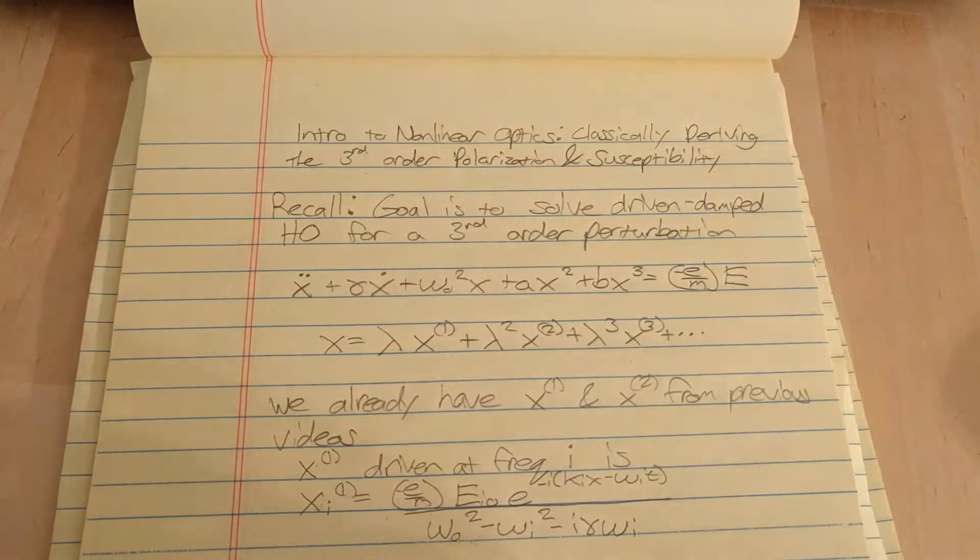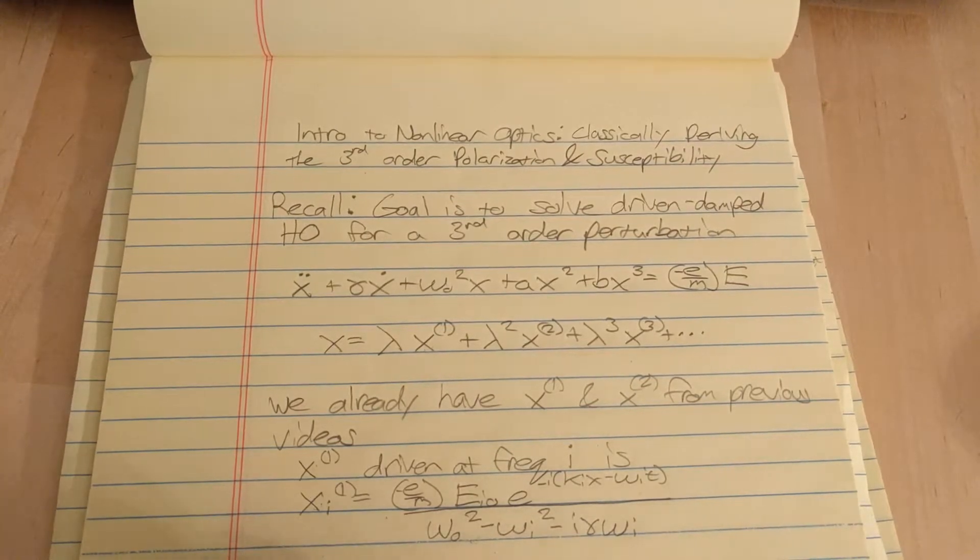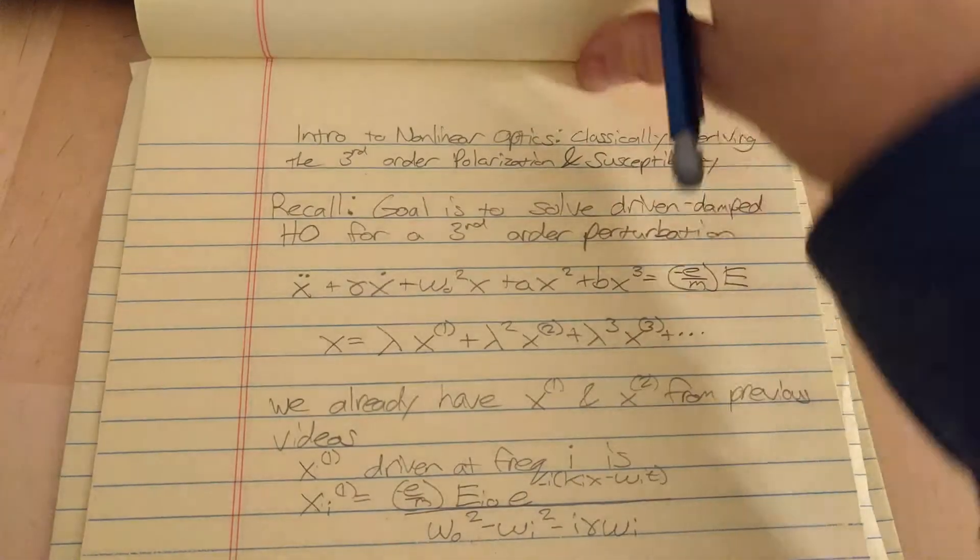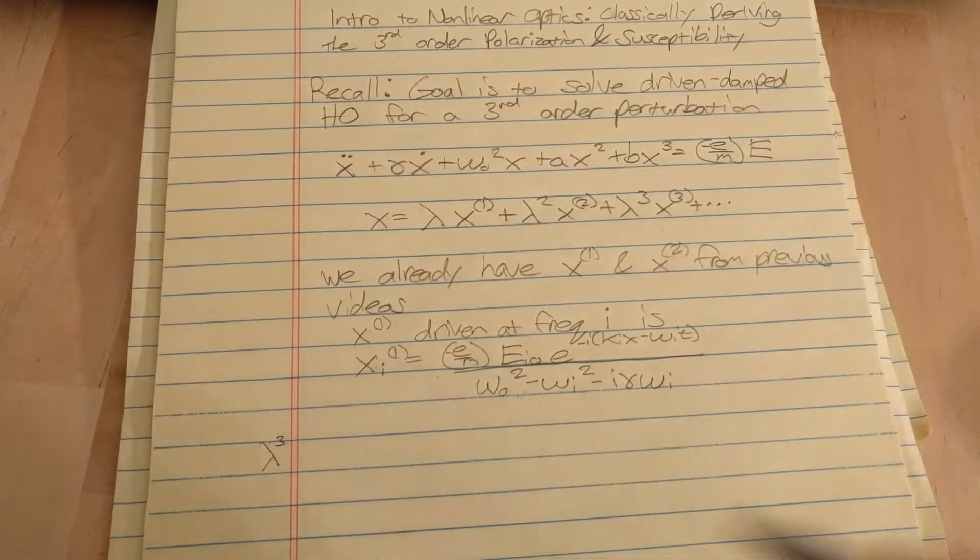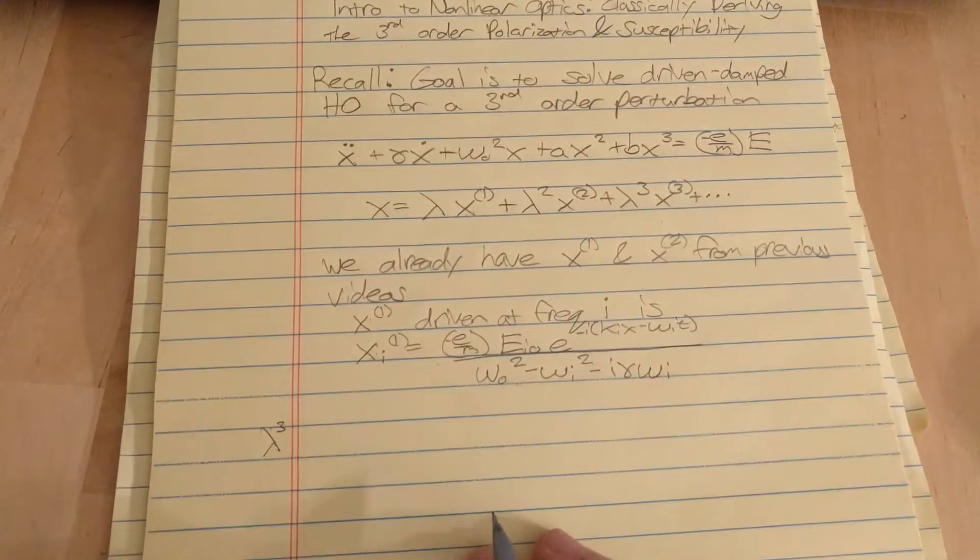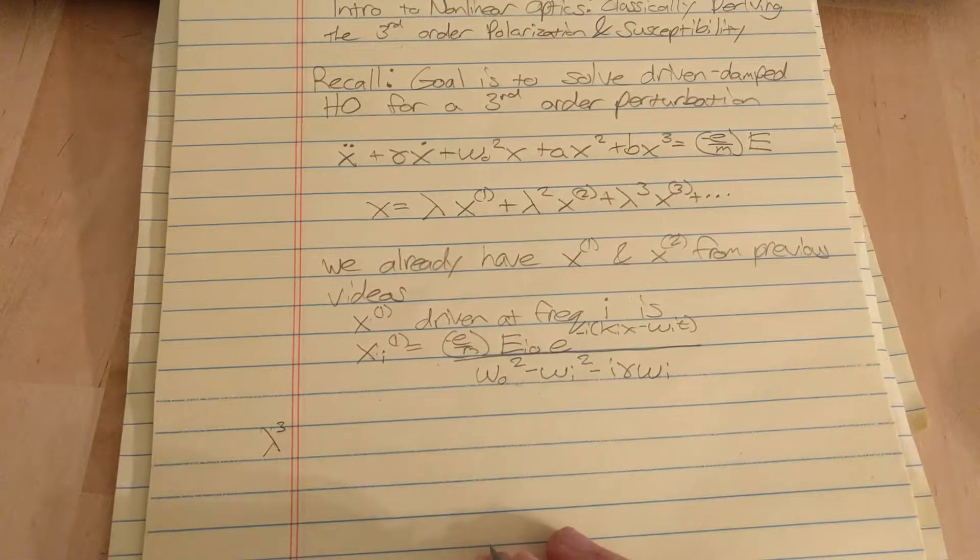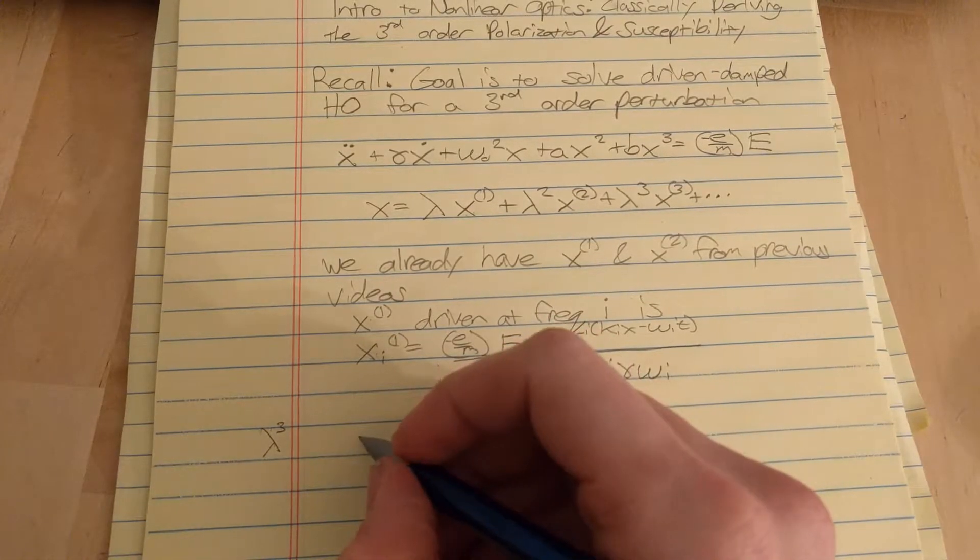Okay, so to do the third-order part we need to find all the terms with lambda cubed in them. And if you go through everything you find that all the terms with lambda cubed in them you end up with a